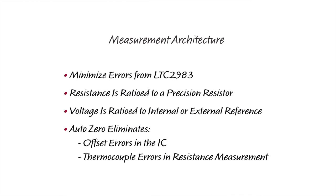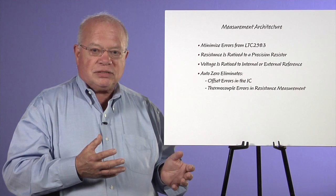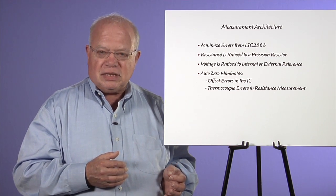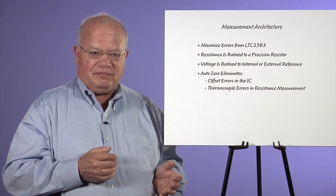With a resistance sensor, you have to reverse the sensor current periodically or else you'll get thermocouple errors from the sensor because the wires in the sensor generate thermocouples. You also have to keep the power low in the sensor or else you'll have self-heating effects.